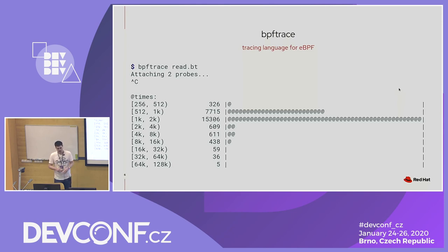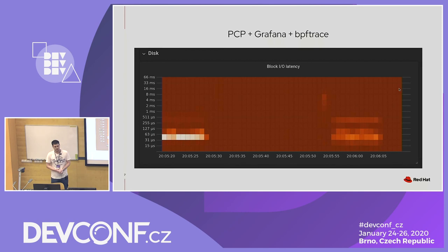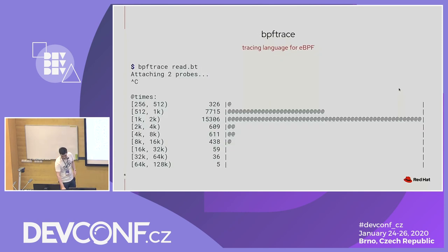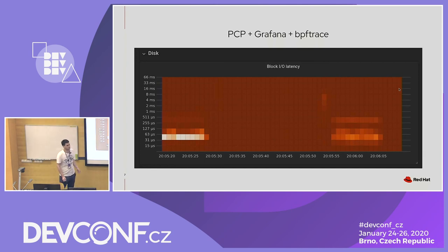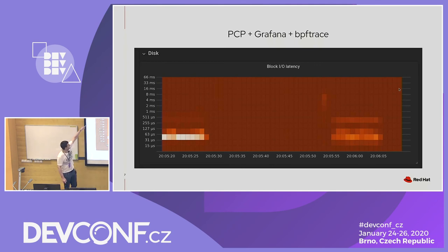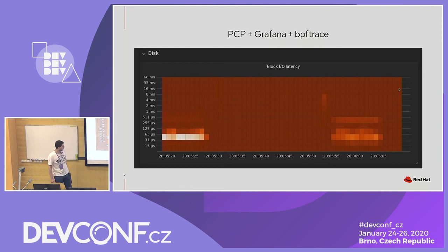The lower bound is 256 in the first bucket, the upper bound is 512, and in the middle you see how many values fall in that bucket. If you combine this with Grafana, you basically get another dimension to your data — you also get time. This is the summary of all the runtime while you had the BPFtrace script running, and here each column is basically one histogram. In Grafana with the dark theme, darker shades indicate fewer values in a bucket. For example, the range is 33 milliseconds to 66 milliseconds, and lighter values mean more values in the bucket. Here we can see that in the first 10 seconds there were a lot of values in the bucket between 31 microseconds and 63 microseconds.